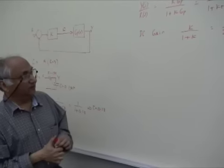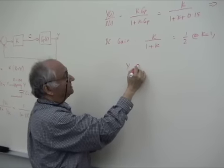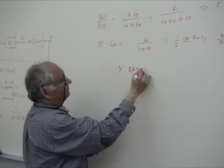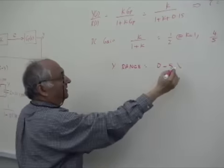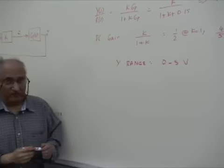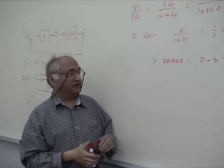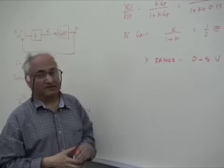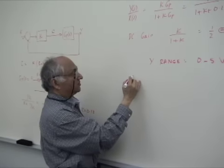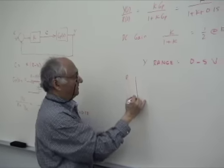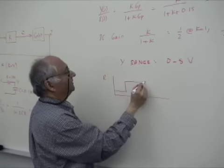Let's see what R we are using. Before we do that we should know that our Y range is 0 to 5 V. So in our system Y is limited 0 to 5 V. So I have chosen R to be within this range to be 1 and 3 V. So R is taken as a square wave that goes between 1 and 3 V.